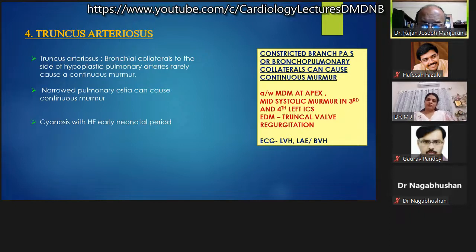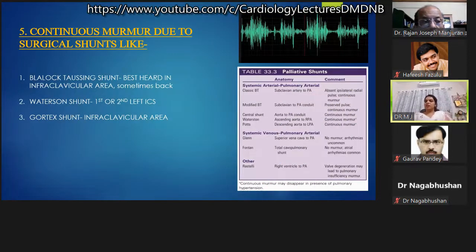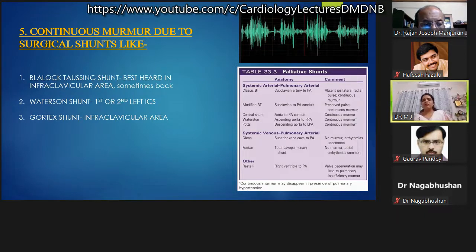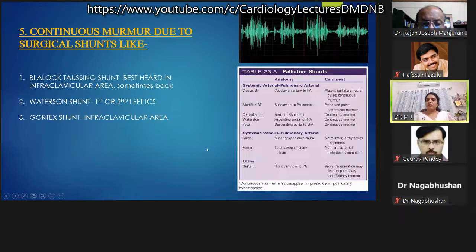Continuous murmurs due to surgical shunts: BT shunt, Waterston, and Potts shunt can have continuous murmurs. BT shunt produces a continuous murmur best heard in the infraclavicular area or sometimes at the back. Waterston shunt may produce a continuous murmur in the first or second left intercostal space, similar to PDA but not as loud or harsh. Potts shunt may also have an infraclavicular continuous murmur.